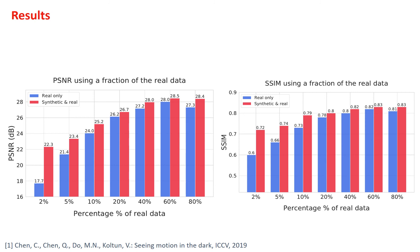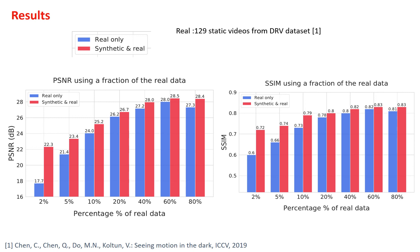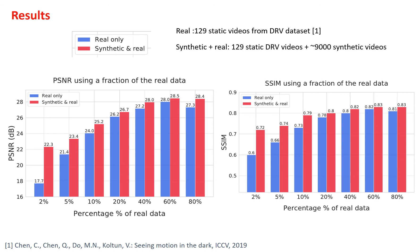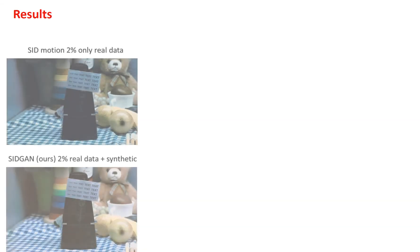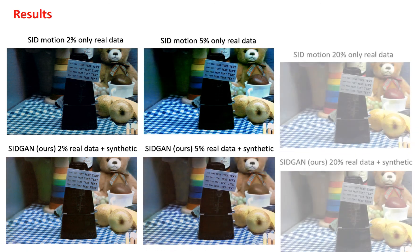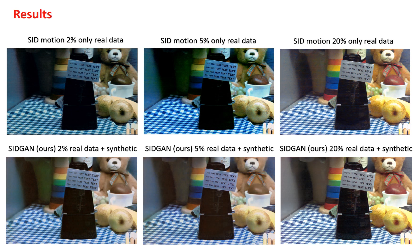To further investigate the effect of adding real data in relation to synthetic data, we randomly sampled the original real dataset into subsets ranging from 2 to 80%. We train models using only the 129 static videos of the DRV dataset, then train models on 9000 synthetic videos and fine-tune on the real data subsets. The addition of synthetic data significantly improves performance, increasing PSNR from 17 to 22, from 21 to 23, and from 24 to 25 for the cases of 2%, 5%, and 10% real data respectively. As the fraction of real data increases, the performance gap reduces, highlighting that synthetic data is most valuable when collection of real training samples is expensive or highly impractical.